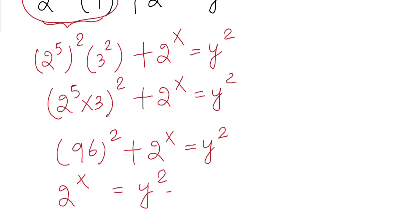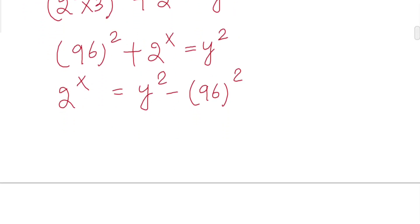Now rearranging this a bit, you will see this is a difference of two squares: y squared minus 96 squared, which allows us to apply this formula: y plus 96 times y minus 96.